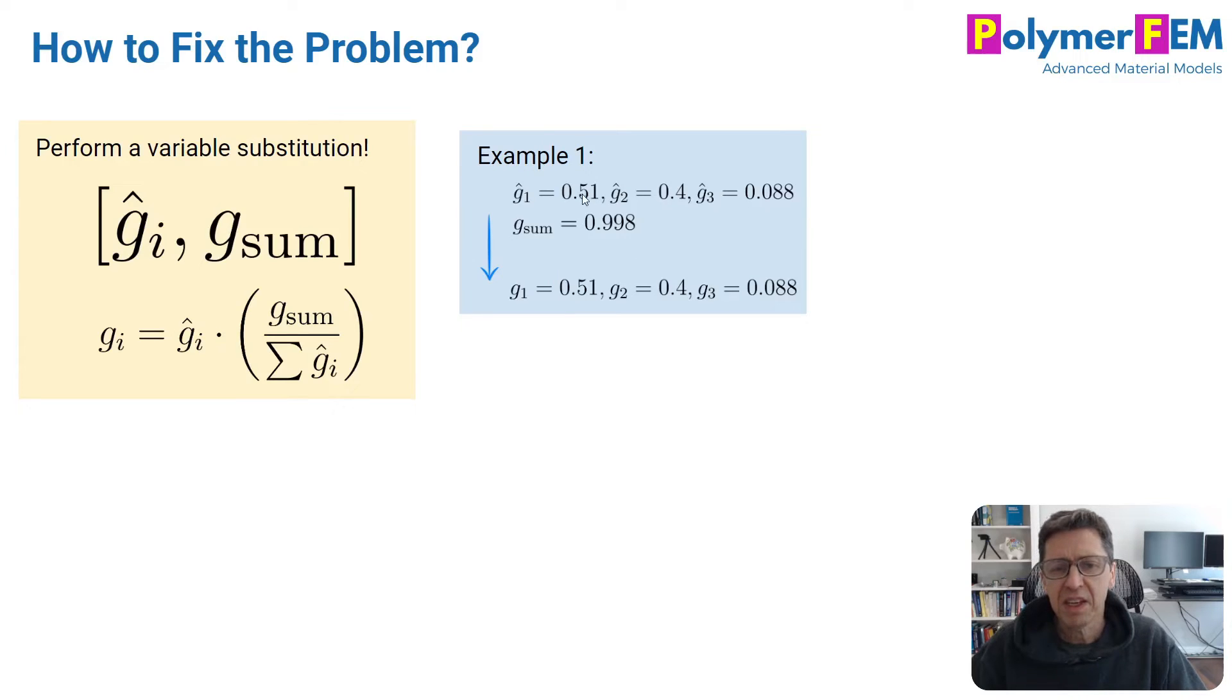So as an example, if g1 hat is equal to this, g2 hat this, and g3 hat this, these are the numbers from the previous page, the g sum then becomes 0.99.